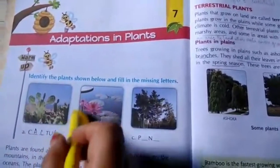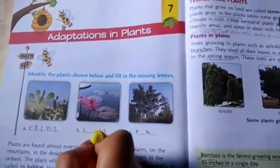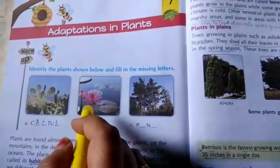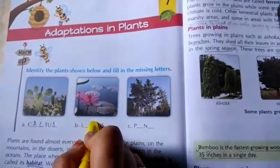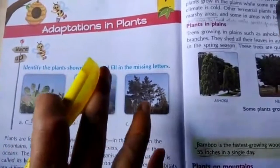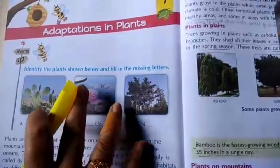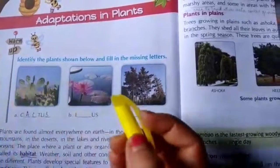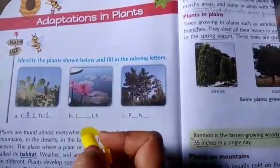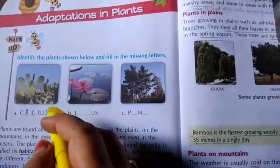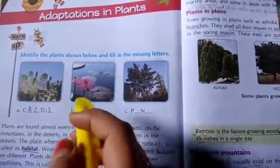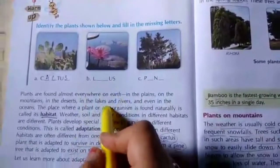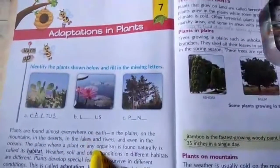So the plant tries to adjust to the surrounding where it is living. Adaptations are some special features that allow a plant or animal to live in a particular place or habitat. These adaptations might make it very difficult for the plants to survive in different places. It explains why certain plants are found in one area but not in another — how they adjust with certain features and survive in that area.